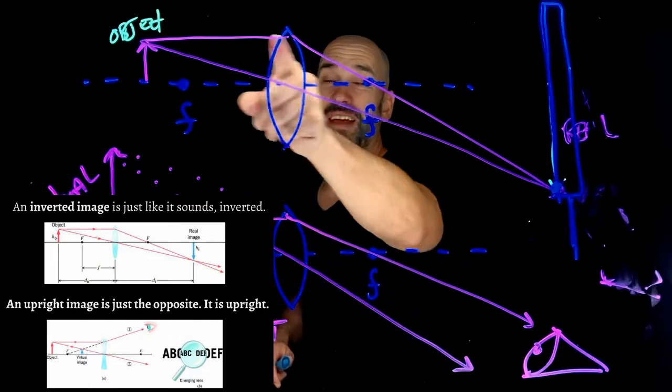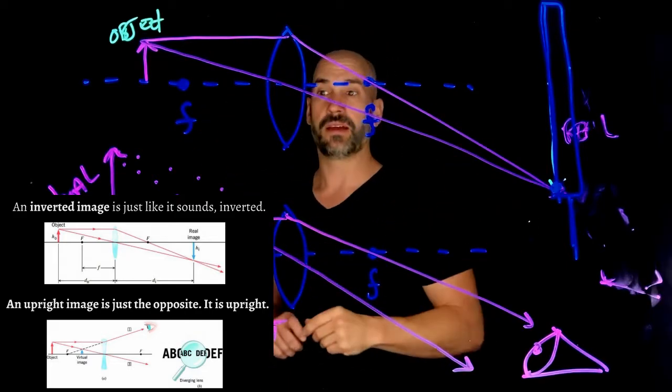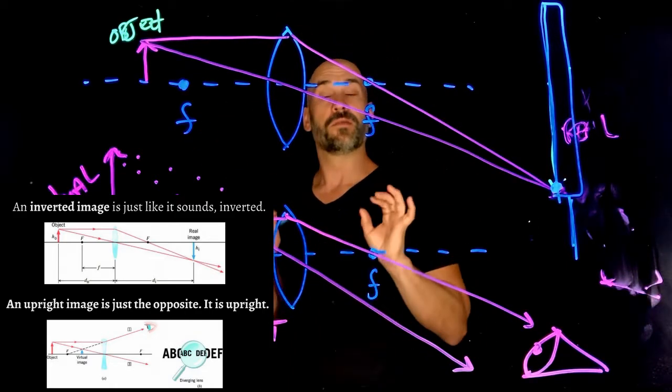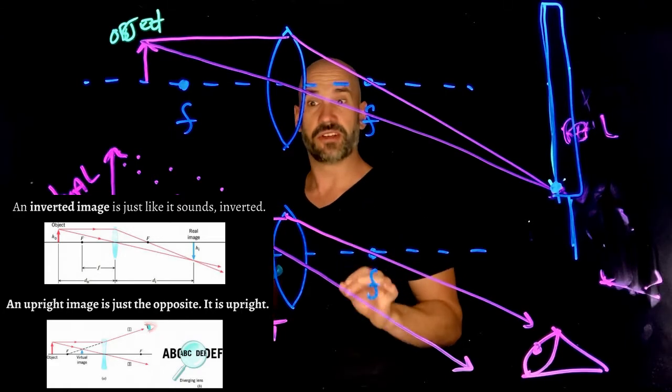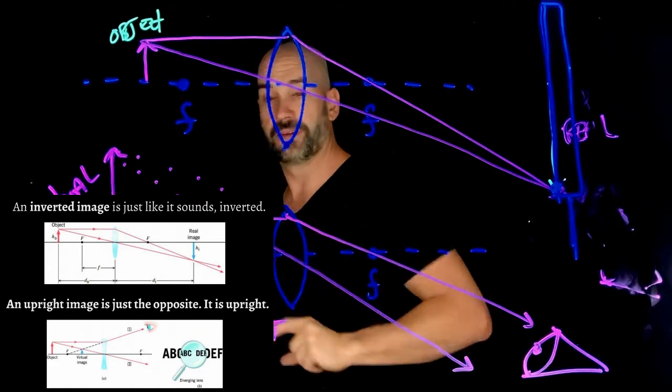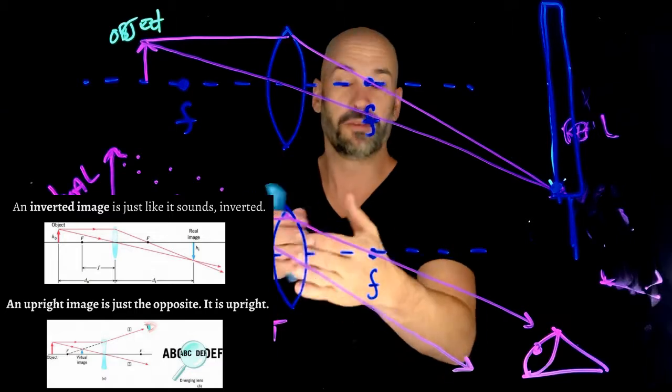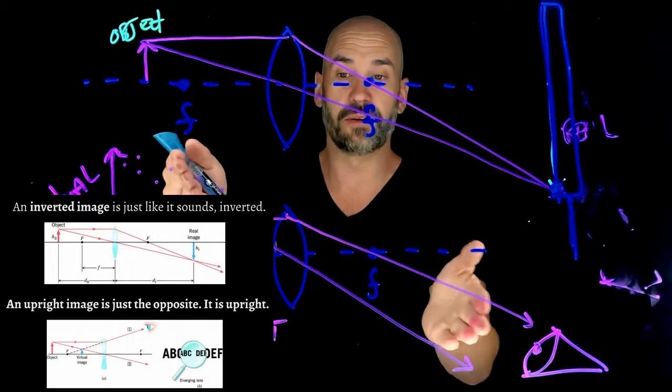That's just the way that light works when it goes through a lens. Now, virtual images tend to be upright. That's the way that it works for the geometry of the light rays.